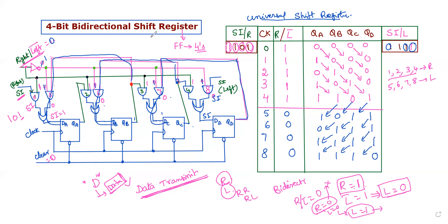That is why it is called a 4-bit bidirectional shift register. This kind of shift register is mainly used in data transmission and communication applications. Thank you.